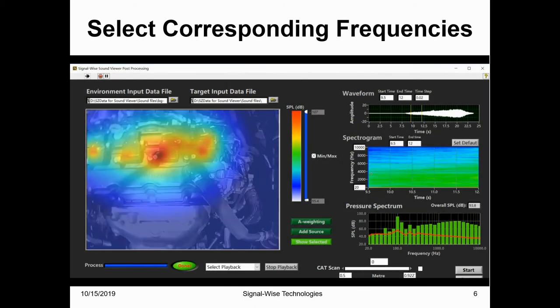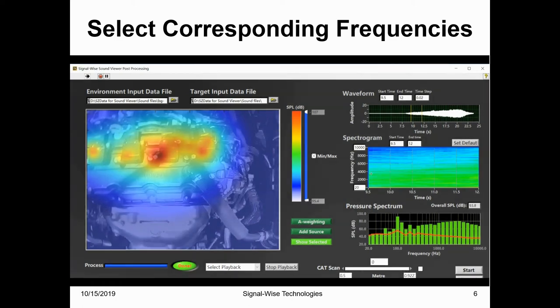In order to identify the frequency contents of the engine spark plugs noise, we can select the frequency range by drawing a rectangle in the spectrogram on the right side to view the corresponding engine spark plugs noise inside the target area of interest.